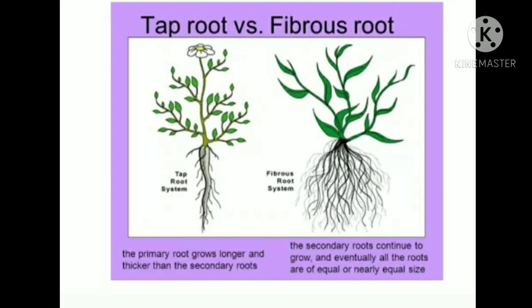In tap root plants, the primary root grows longer and thicker than the secondary roots. In fibrous root plants, secondary roots continue to grow and eventually all roots are of equal or nearly equal size.